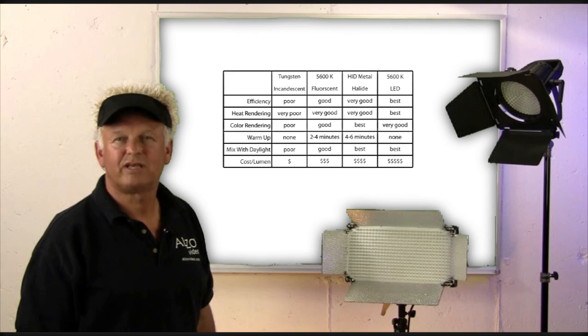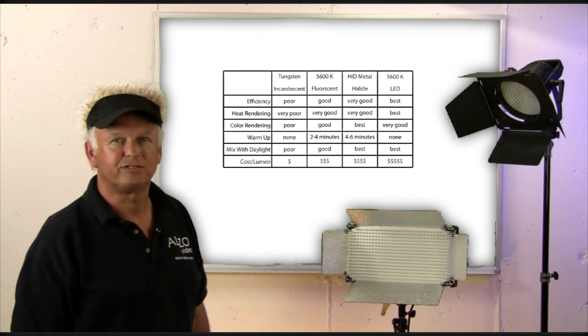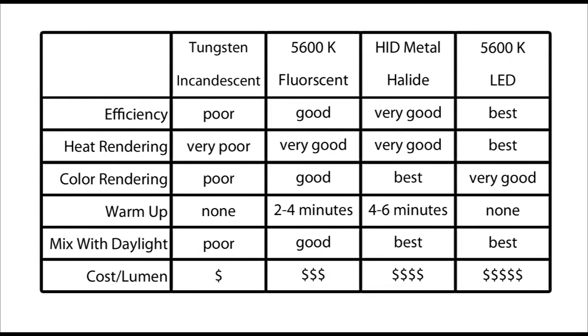To summarize the lighting technology choices, let's compare all four technologies. The first thing you will notice is that the tungsten incandescent has the worst score. It wastes energy, gets real hot, and does not render color very accurately. The other three light technologies have similar ratings, so it's difficult to say that one of them is the best choice.